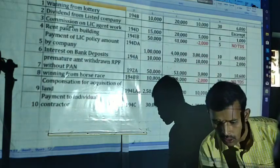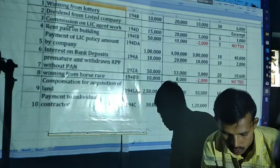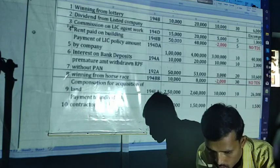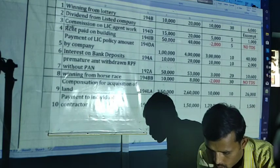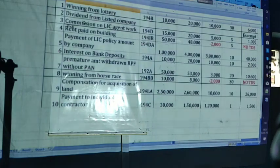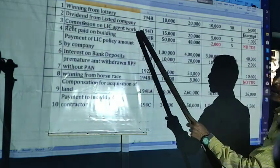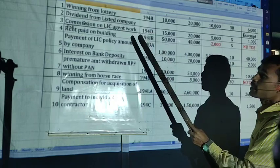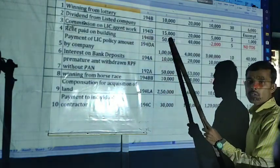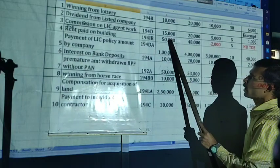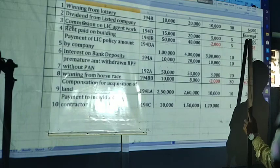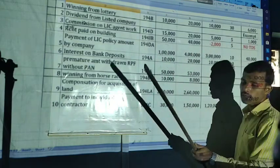Commission on LIC agency work — it is insurance commission under section 194D. Up to 15,000 — no TDS. Amount is 20,000. 20,000 into 5% — that is 1,000 will be the TDS amount.